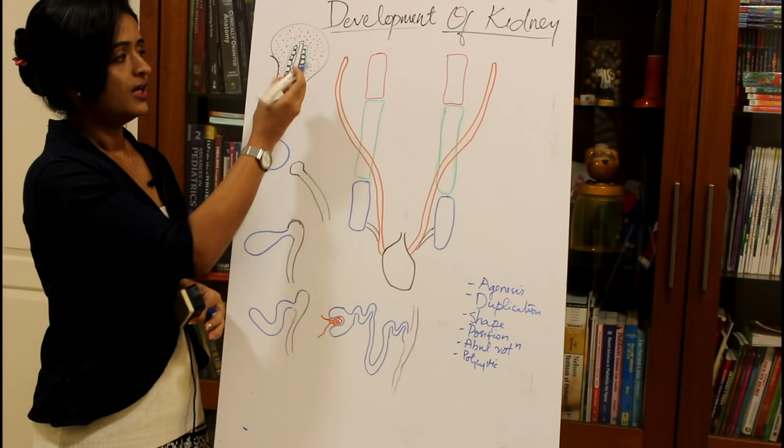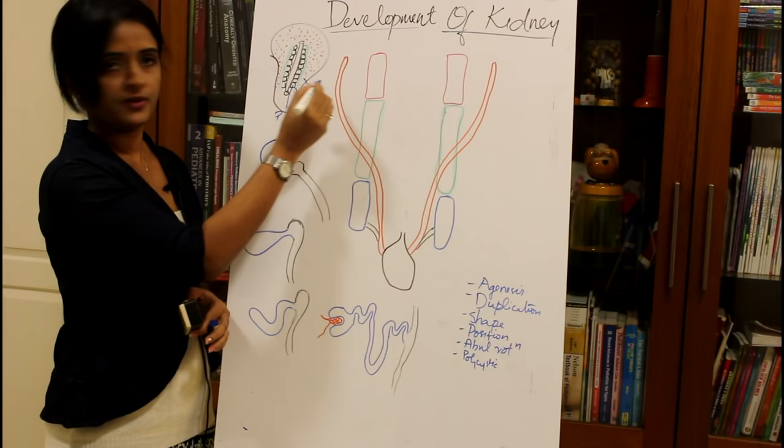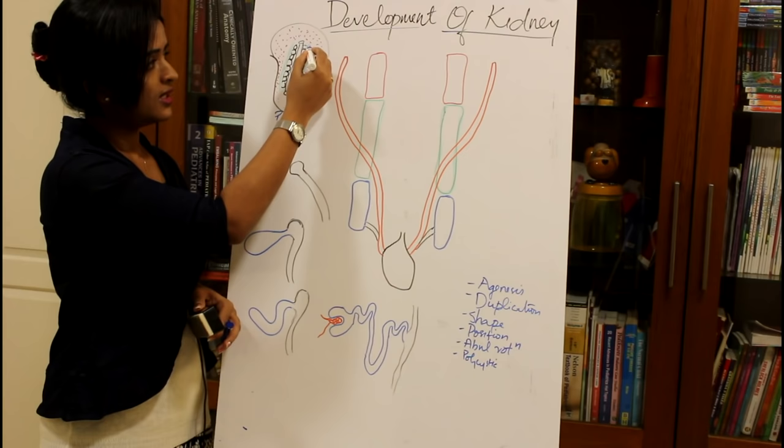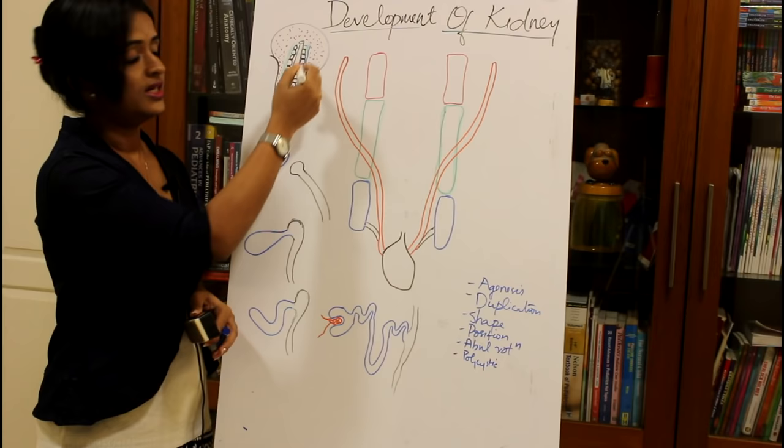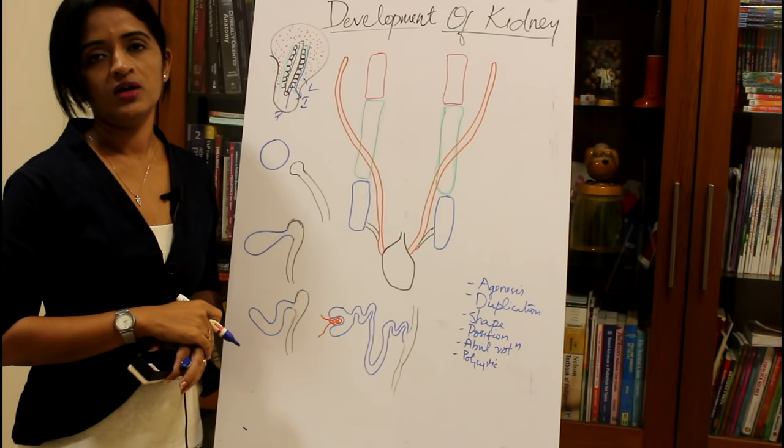The intraembryonic mesoderm is subdivided into paraxial mesoderm, the intermediate mesoderm, and the lateral plate mesoderm. Out of these, the intermediate mesoderm, lying between the paraxial and lateral plate mesoderm, develops into a cord known as the nephrogenic cord, and it is from the nephrogenic cord that we have the development of kidney.